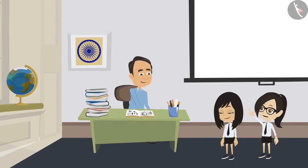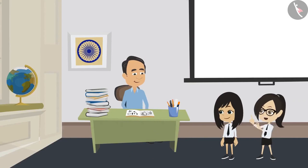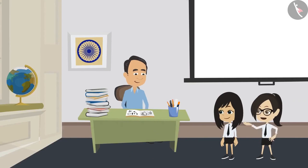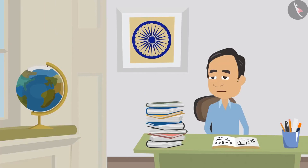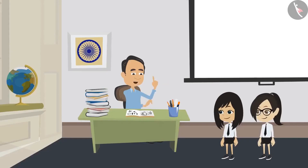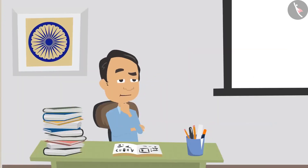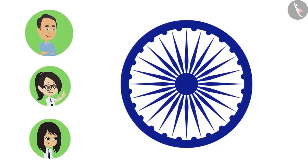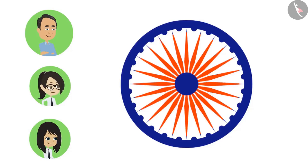Sir, why are there so many radius in the circle on the wall behind you? Oh, this one. This is Ashok Chakra. But you are right that it is in the shape of a circle, and there are many lines joining the center to the boundary. So they can be called a radius. But why does it have so many radius? A circle can have only one radius.